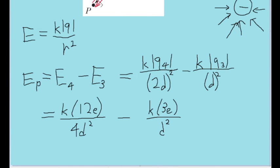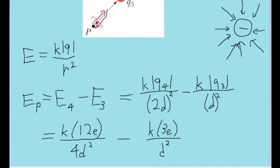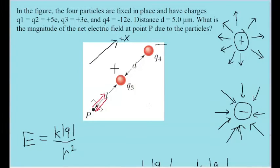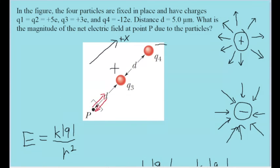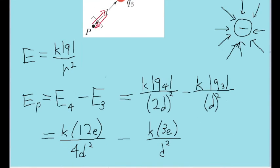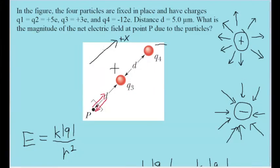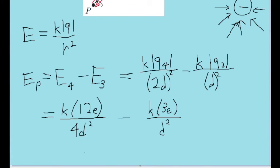So that's what I've done here. I've put in 12e for Q4, and I've put in 3e for Q3. And the reason why I didn't include the negative sign for Q4 is because, again, we're only looking at the magnitudes here. So the signs can be disregarded. I've also replaced the 2D squared with 4 times D squared, since the 2 squared can just be rewritten as 4.